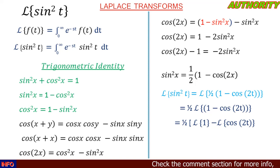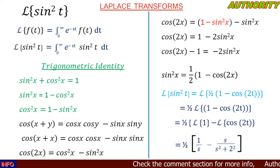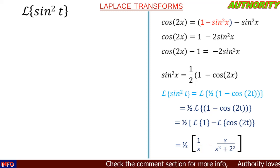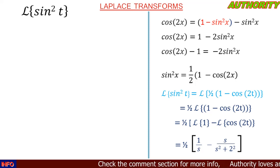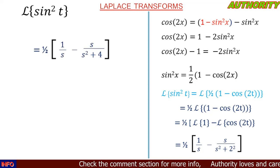The Laplace transform of 1 is 1/s, and the Laplace transform of cos 2t is s/(s² + 2²) = s/(s² + 4). So we have ½ × [1/s − s/(s² + 4)].